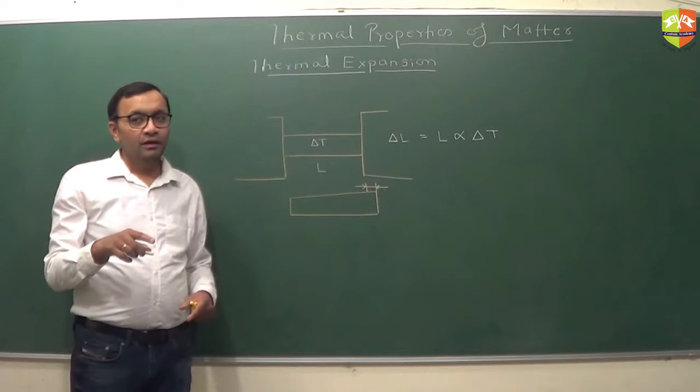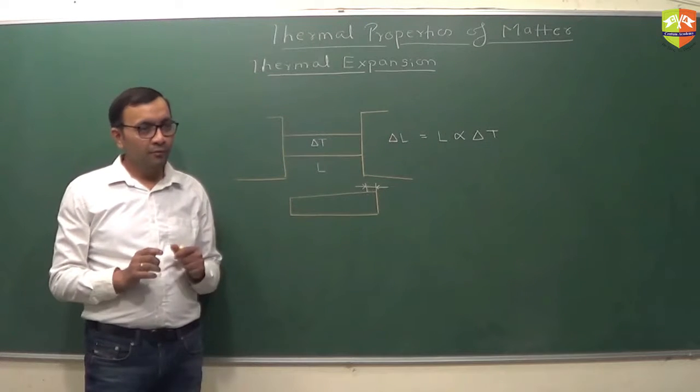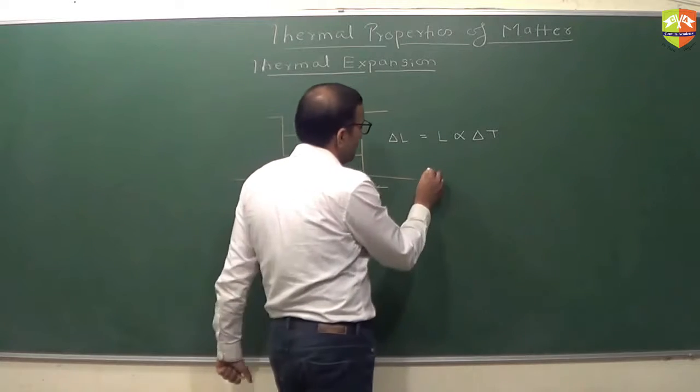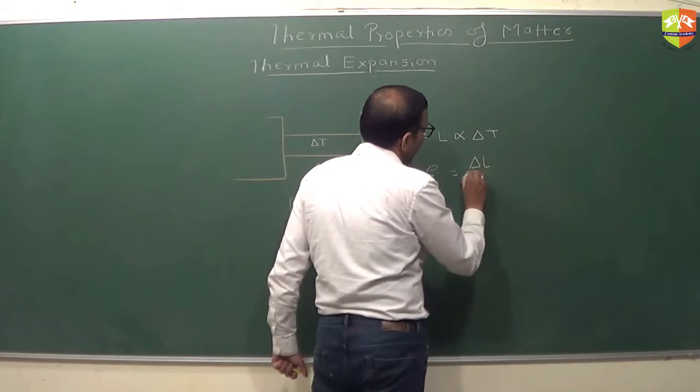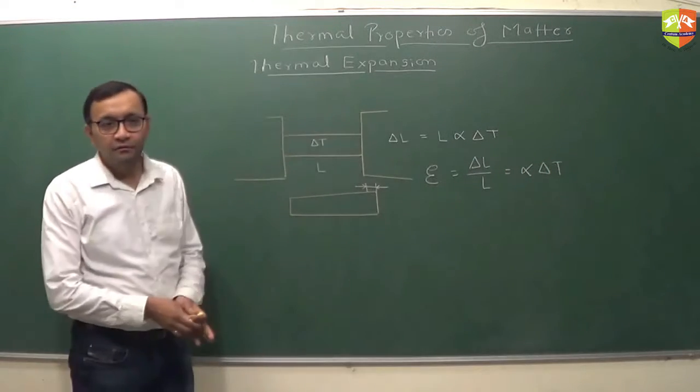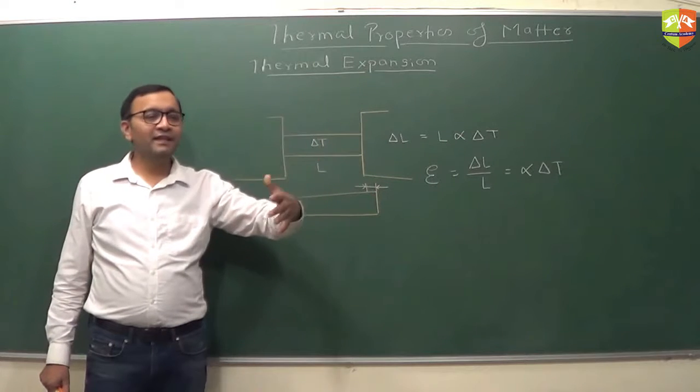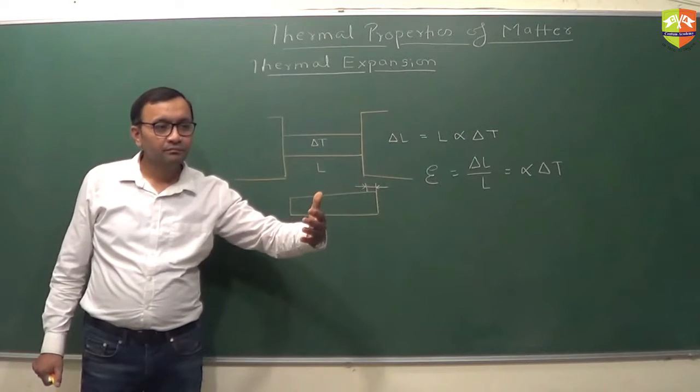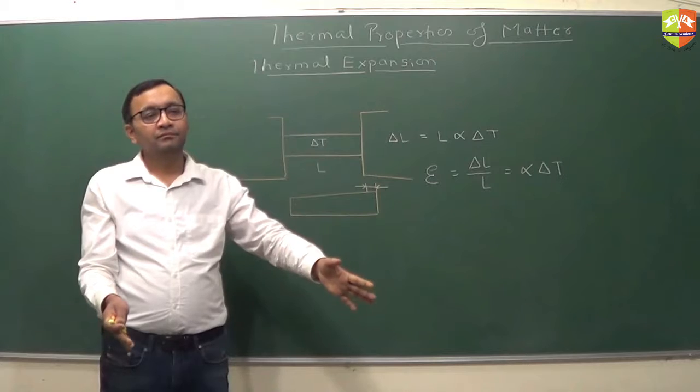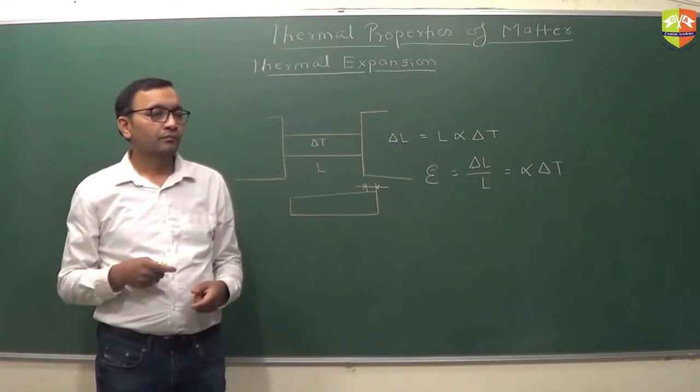So in a way it is in compressed state. Getting my point? And what is the strain in the rod? Delta L by L, which is what? Strain is delta L by L which is equal to alpha delta T. This is called thermal strain. Because the natural length of the rod changes at different temperature. At 20 degree Celsius, length should be this much to have zero strain. But if you don't allow it to expand, there will be a strain from what it should have been.